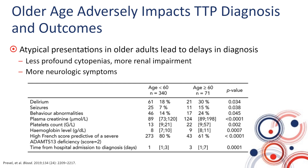Their renal function was poorer, with significantly higher serum creatinine, and their platelet count was also higher than in patients less than 60 years of age. This creates diagnostic challenges. The French score, which is very effective in identifying patients with TTP, relies on a low platelet count less than 30,000 and the absence of significant renal impairment. However, its sensitivity drops from 80% in younger patients to only 60% in adults over 60.